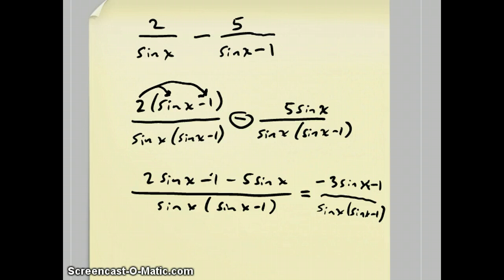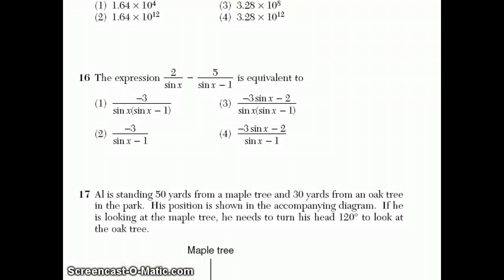That's why you want to check your answers on the regions. These are all 2s here. So, the answer is minus 3 sine x minus 2 over sine x times sine x minus 1. And that seems to be an answer choice there. Choice number 3 to number 16.